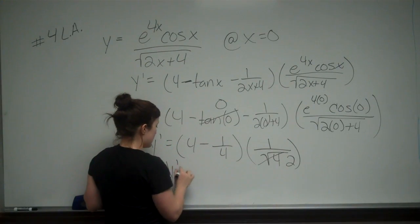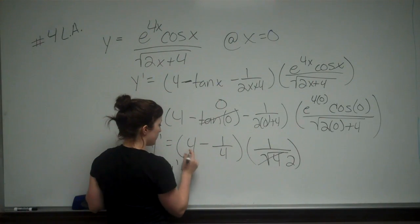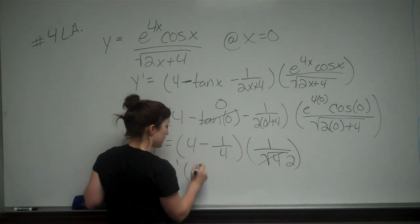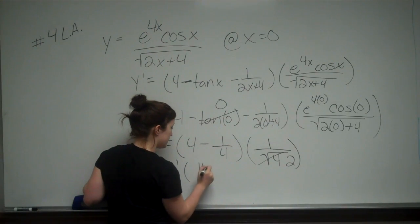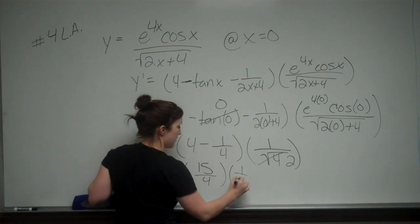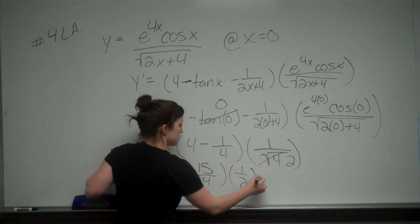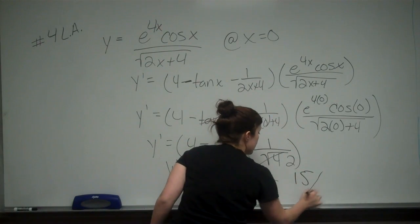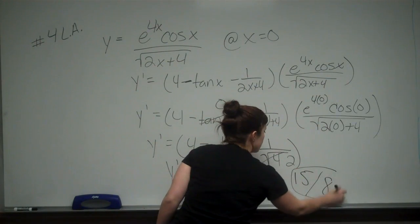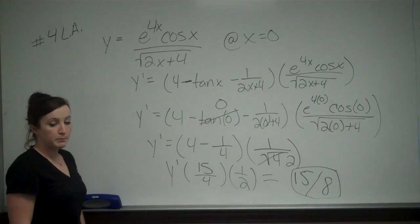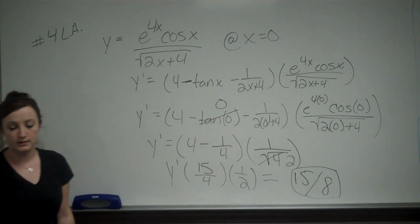So y prime equals 4 — rewritten as 16 fourths — minus 1 fourth, which is 15 fourths, times one half. Our final answer is 15 eighths. And that is problem number 4 for the long response.